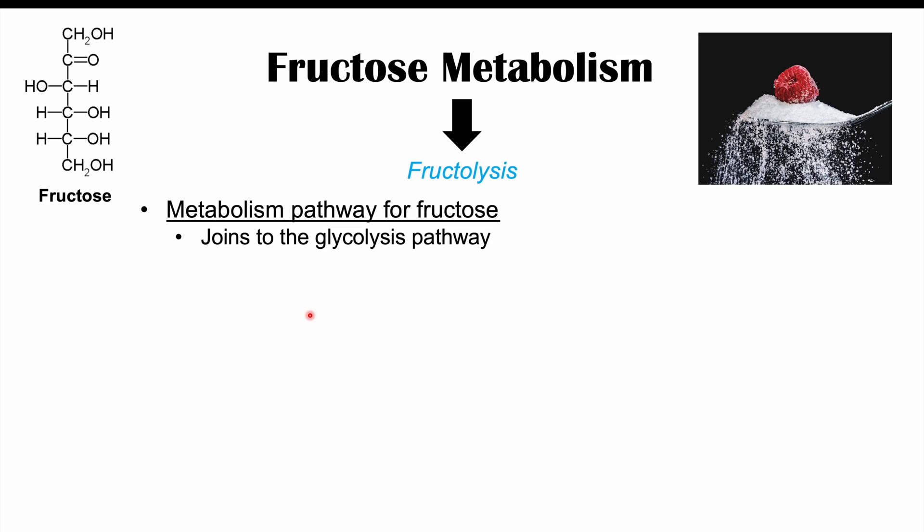The fructolysis pathway eventually joins the glycolysis pathway, or the breakdown of glucose. Fructolysis has certain devoted enzymes in its own pathway, and then eventually the products of fructolysis join the glycolysis pathway. Fructose itself is a monosaccharide — a single monomer sugar.